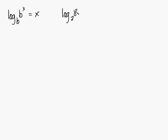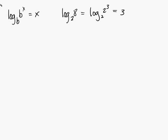Log base 2 of 8 can be written as log base 2 of 2 cubed, and that's equal to 3. See, 2 to the third power equals 8. So all I'm doing is rewriting the 8 as 2 cubed, so that way these 2's cancel out, as well as the word log, and all you're left with is a 3.